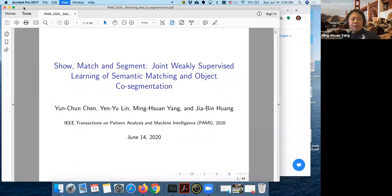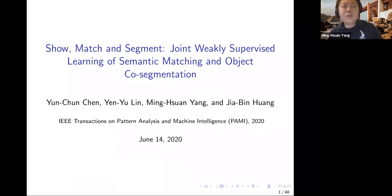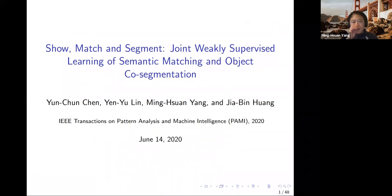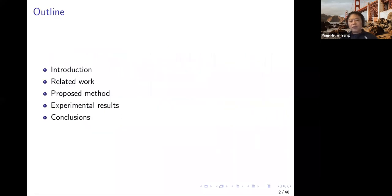Thanks for inviting me to give a talk at this workshop. Today I'm going to mainly talk about some work that we recently finished. And if time allows, I will also show some of our ongoing work. This work is about how to utilize semantic matching and object co-segmentation, and we solve two problems at the same time. This work was published in CVPR and ECCV.